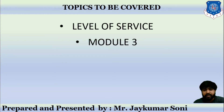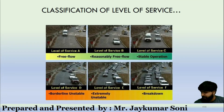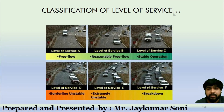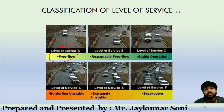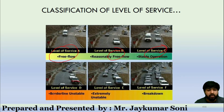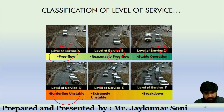Let us begin the session. We have learned that the Level of Service is divided into 6 types based on traffic flow and user perspective. LOS A is called free flow. LOS B is reasonably free flow. LOS C is stable operation. LOS D is borderline unstable operation. LOS E is extremely unstable operation. And LOS F is called breakdown.